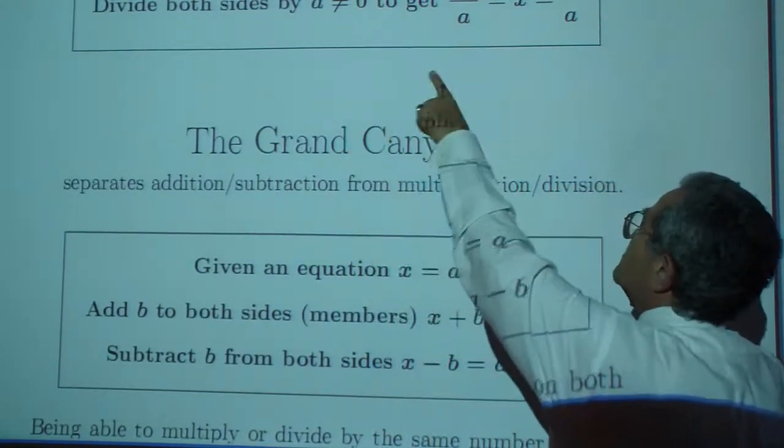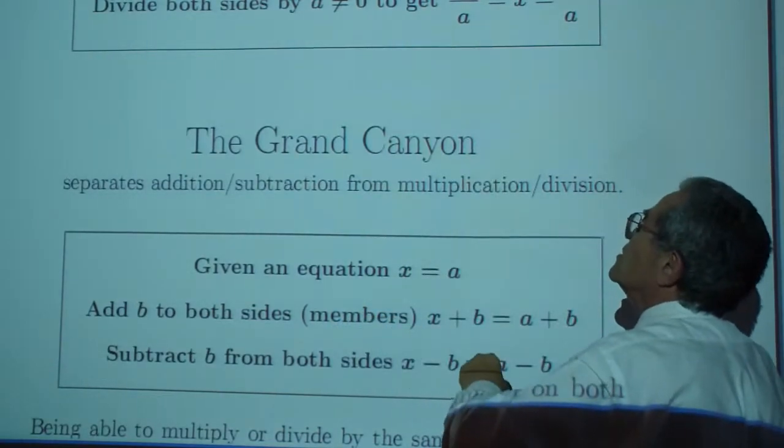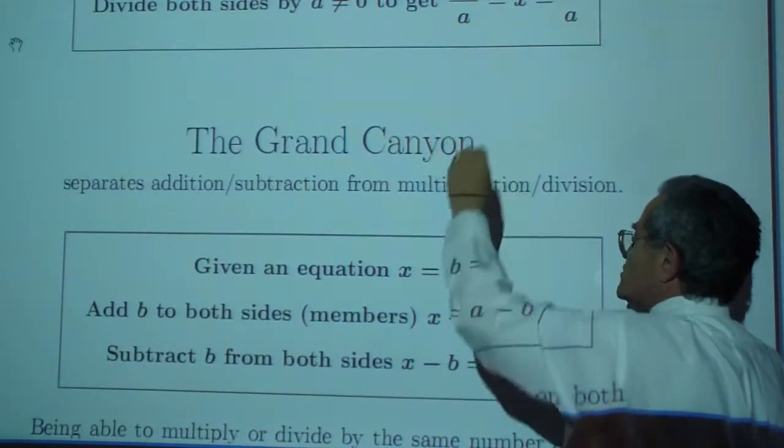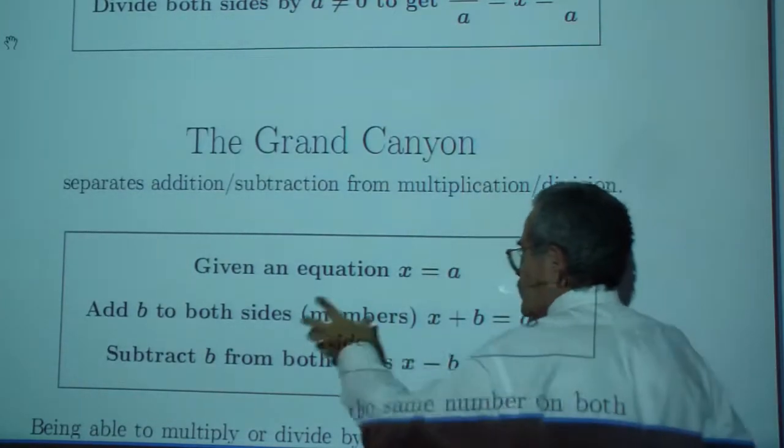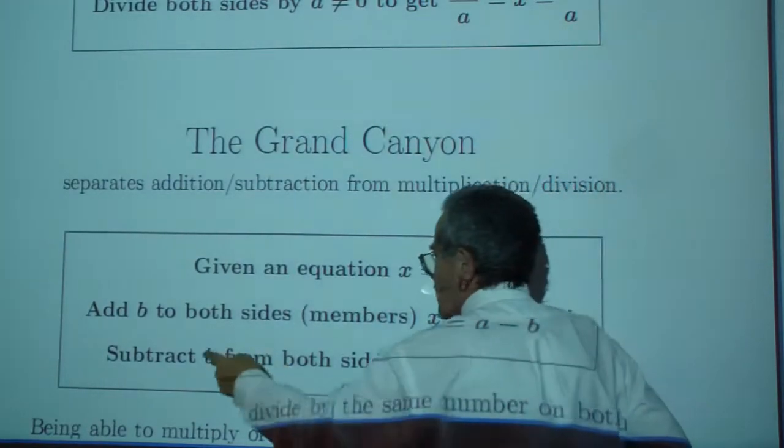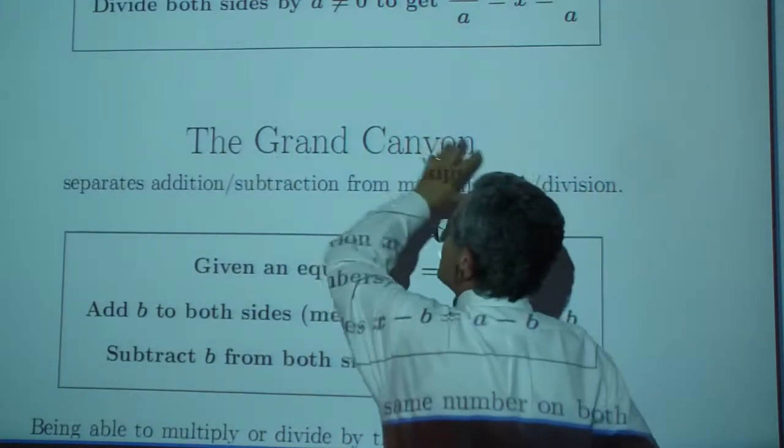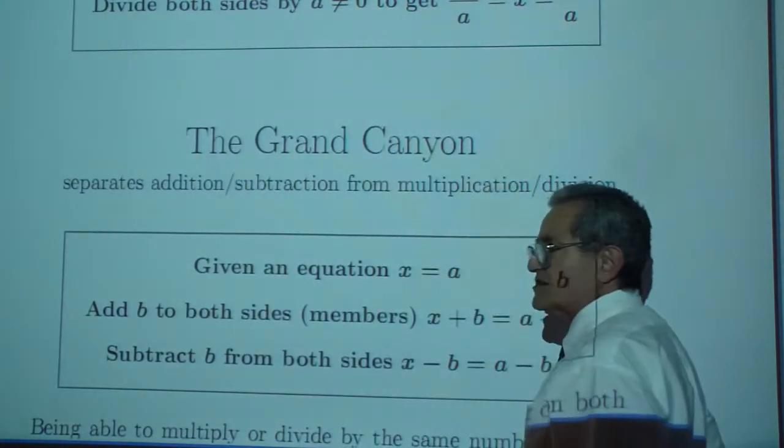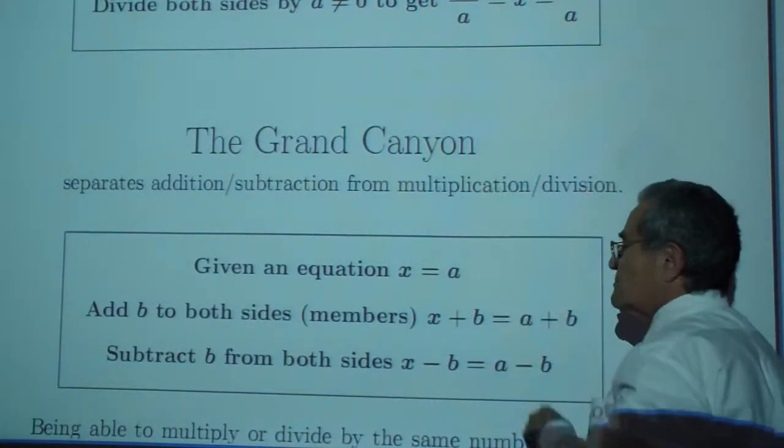You cannot undo multiplication by addition or subtraction. You cannot undo addition by multiplication or division. You cannot undo subtraction by multiplication or division. There is a grand canyon here. You cannot cross it. You cannot fly over it. These two are completely separate.